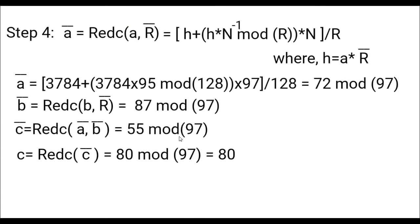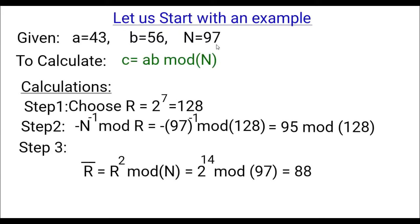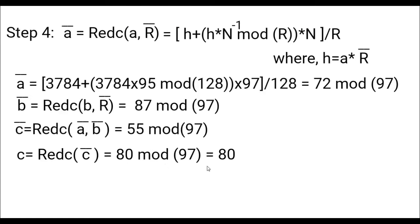We reduce each factor: we find ā, b̄, and c̄ using the Montgomery reduction formula. A small Python code — or any language like C or Java — can implement this. Once we compute c̄, we apply the r_inverse reduction to c̄ and get c = 80 mod 97, giving the final value 80. So the total value of 43 × 56 mod 97 is reduced through the Montgomery process to 80 mod 97 = 80.